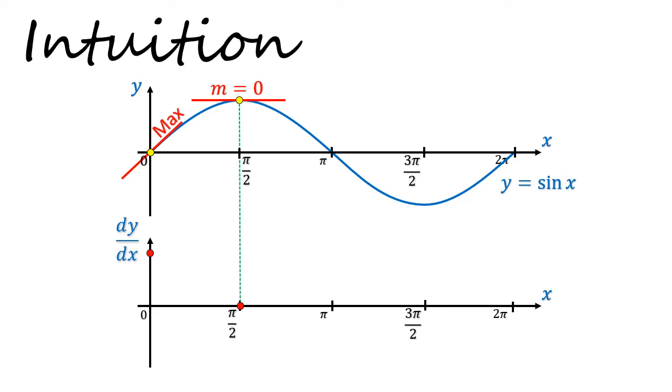So the gradient function, the dy/dx, will also be at 0. By π, the sine graph would be decreasing at its fastest, so the gradient would be at its minimum point.